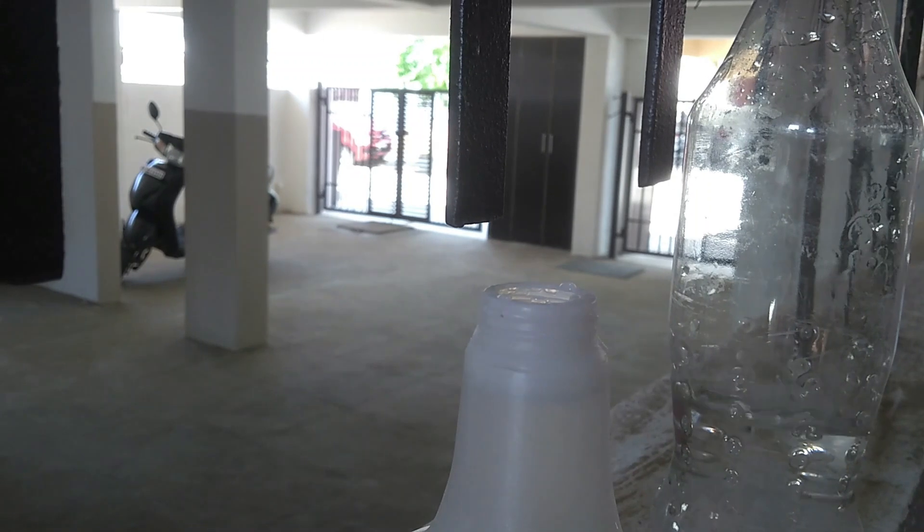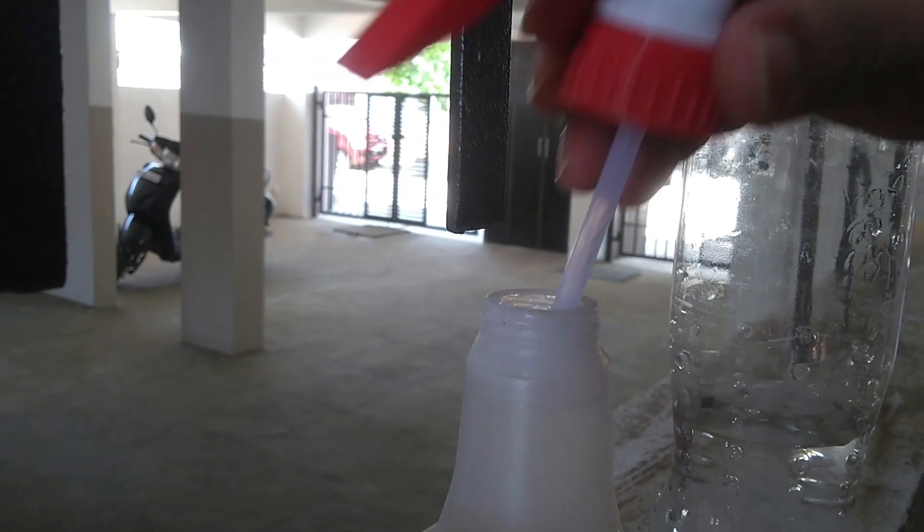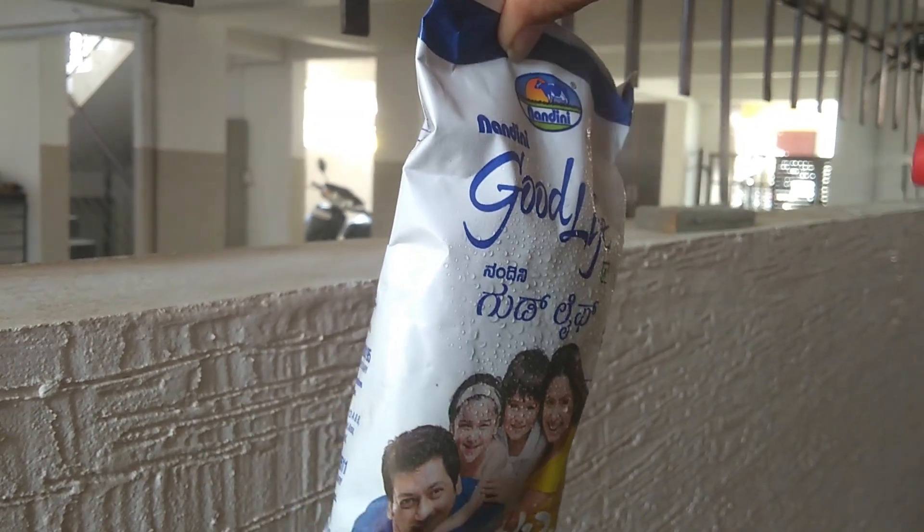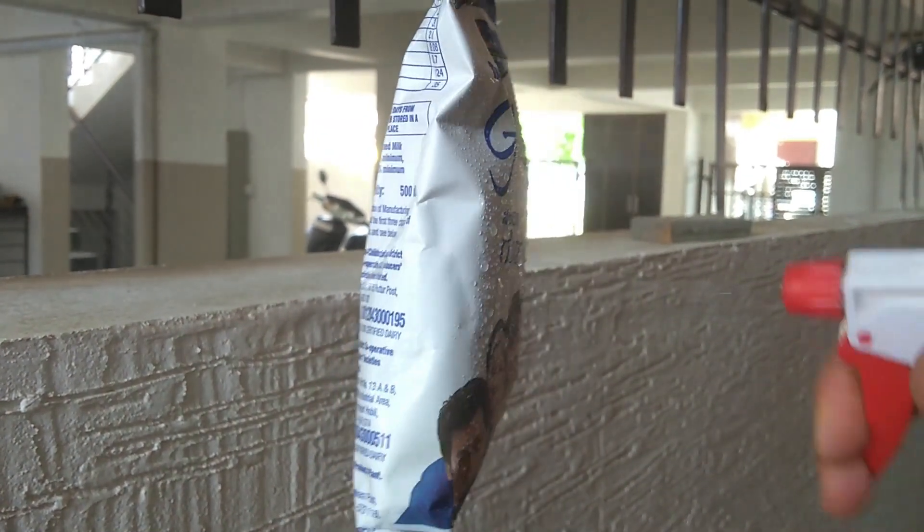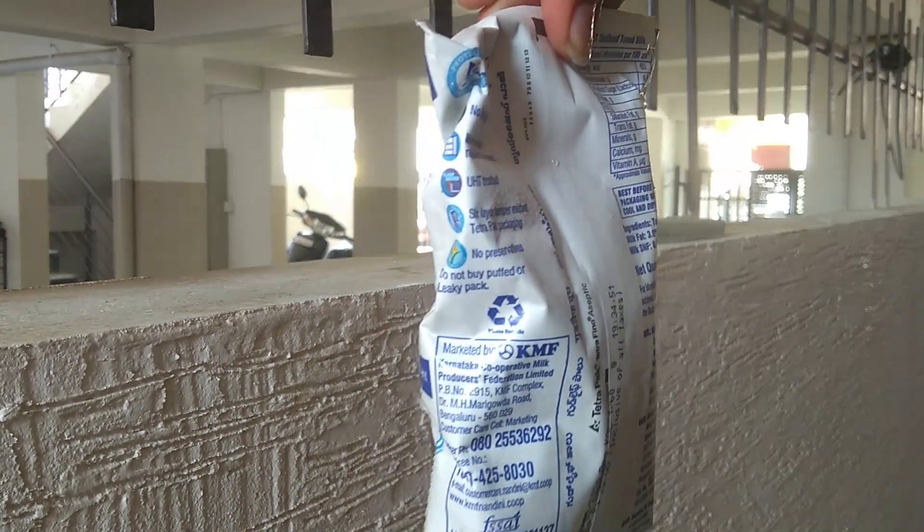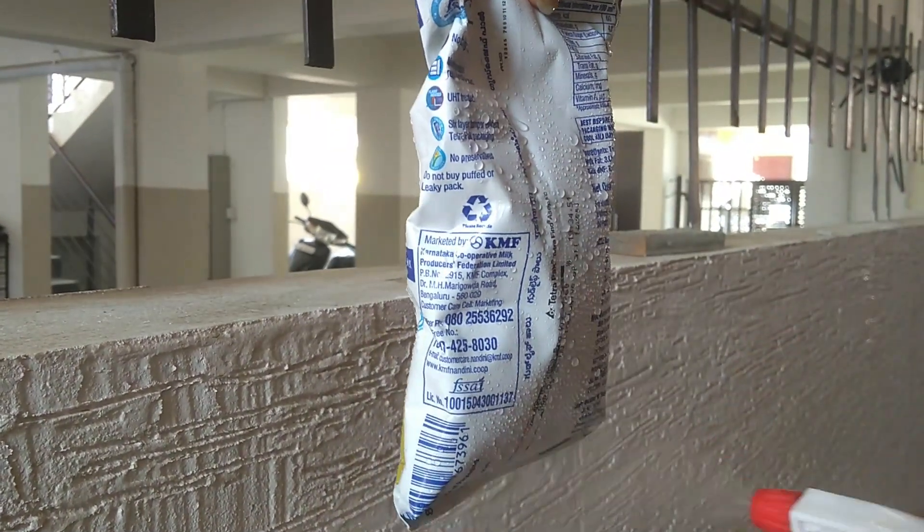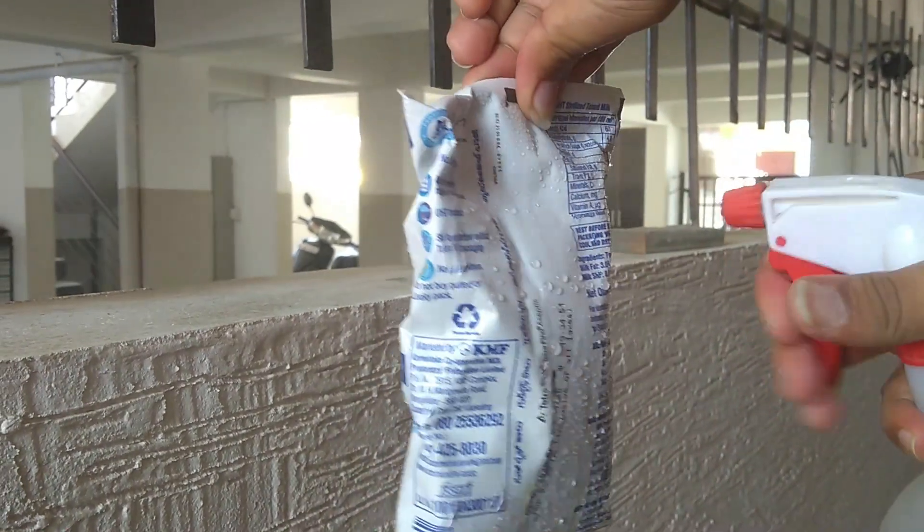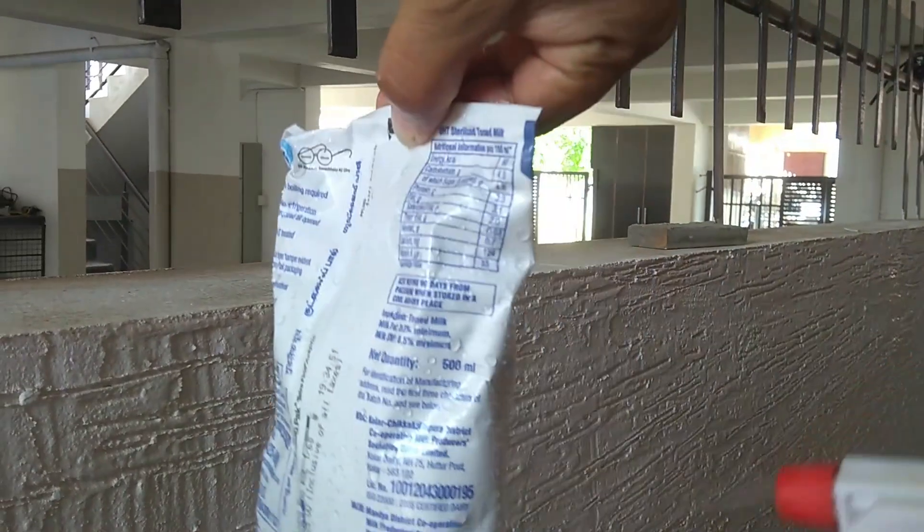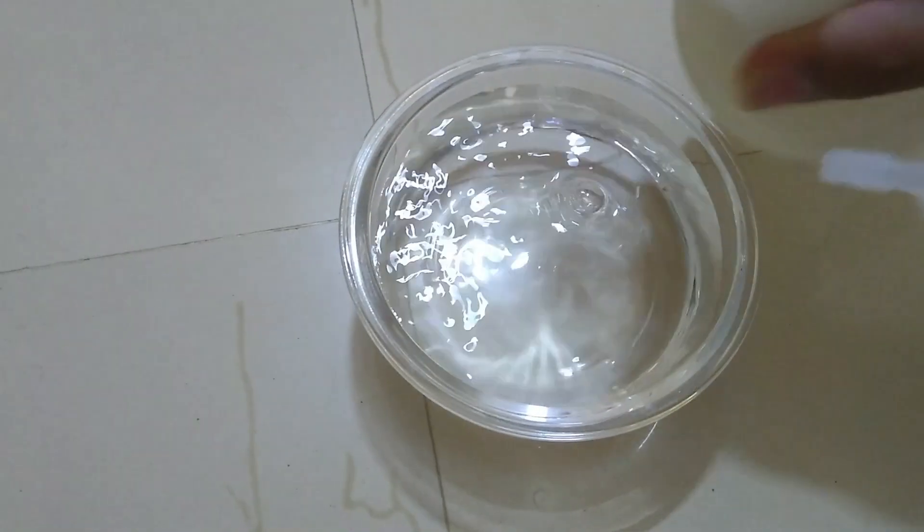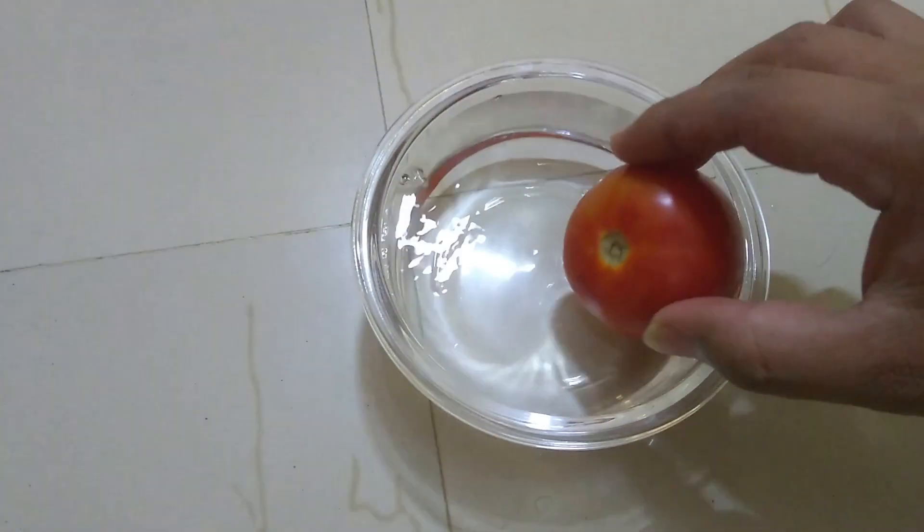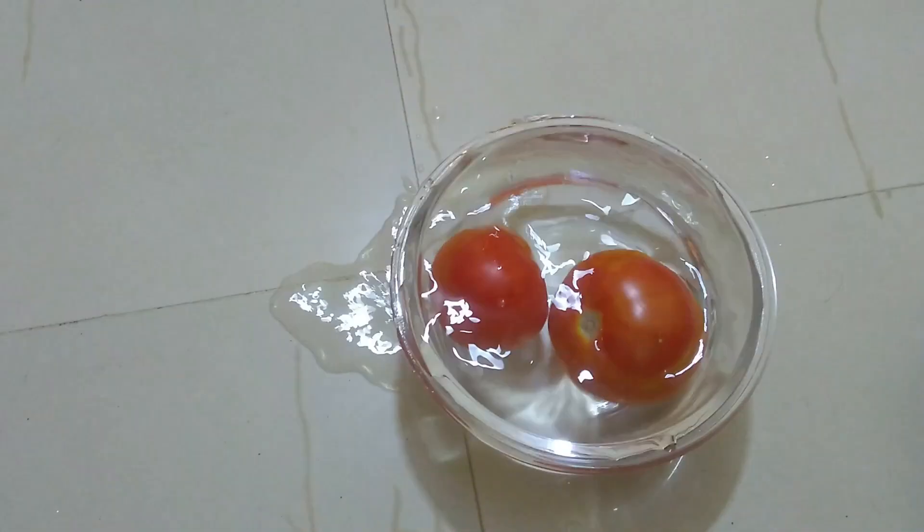We can transfer the solution to a spray bottle and can be used to spray on surfaces, milk or cure packets. You can also clean your vegetables and fruits with this solution. Pour the solution in a bowl and keep your vegetables and fruits for 2 minutes, then wash with tap water.